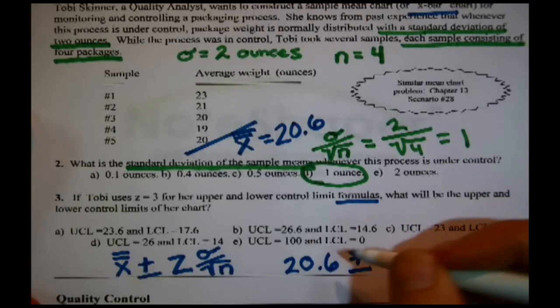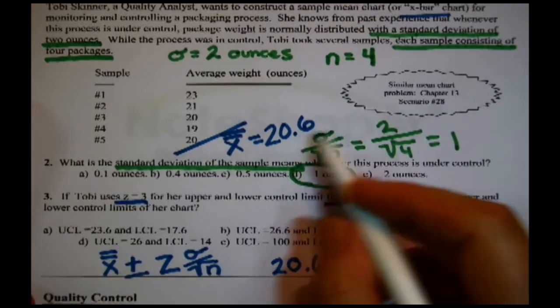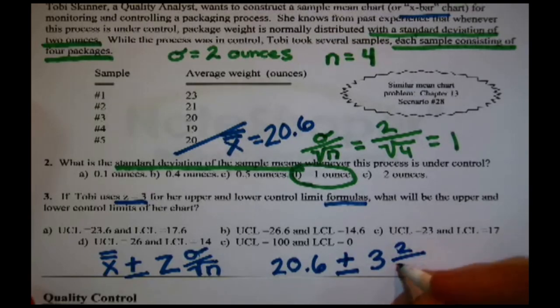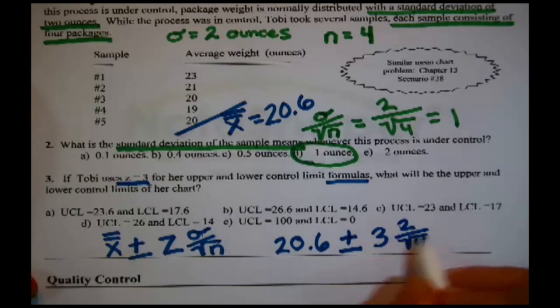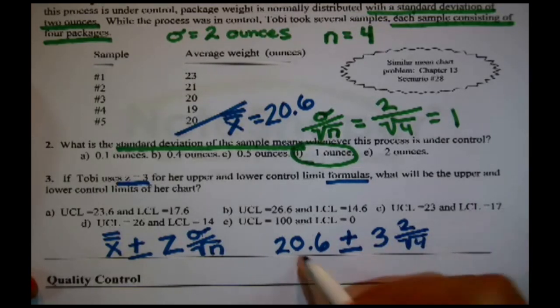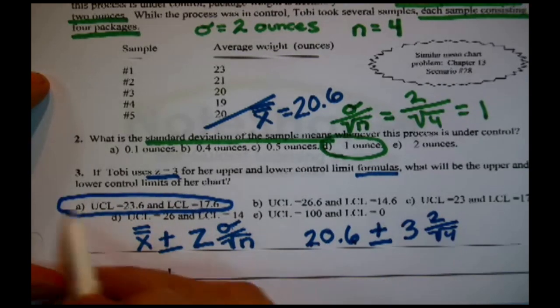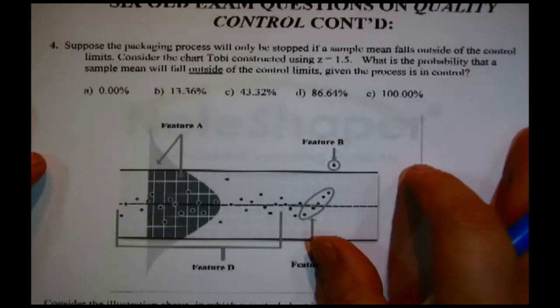To answer this question, you'd say 20.6 plus or minus, depending on whether you're doing the upper control limit or the lower control limit, Z. They just proposed a Z of 3 times, well, you can fill it in here, but we already figured out that that part was 1, right, because it's 2 divided by the square root of 4. So at any rate, what this winds up being is 20.6 plus or minus 3, so the upper limit should be 23.6, and the lower limit should be 17.6, which I believe is the first thing that was volunteered, so that's the answer. There, that's done.